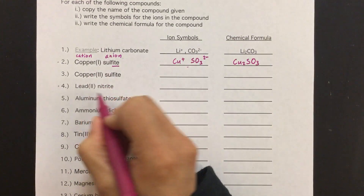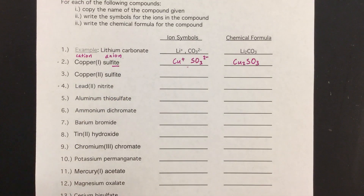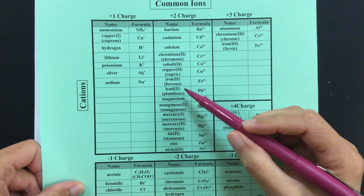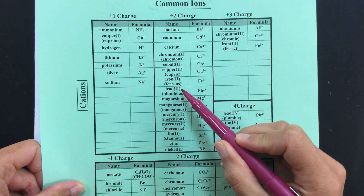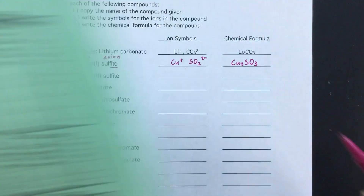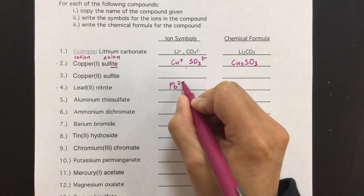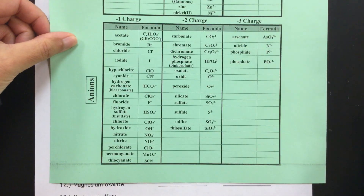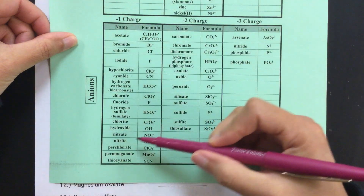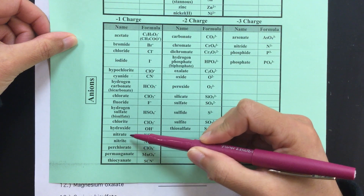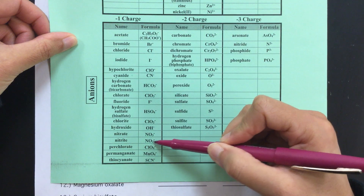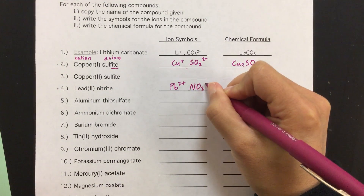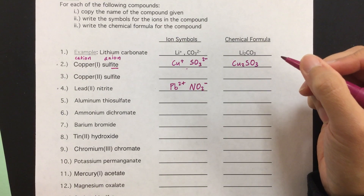The next one is lead 2 nitrite. We're going to find those ions on our list — the first one is always the cation. Lead 2 — the Roman numeral 2 gives you a clue that it's in the positive 2 section. Lead 2 has the formula Pb²⁺, so it has a positive 2 charge. Nitrite will be in the anion section. Make sure you find the exact right ion — notice there are two similar names: nitrate and nitrite. We want nitrite. It's NO₂ with a negative 1 charge. Make sure you write this correctly with subscripts and charges in superscripts.